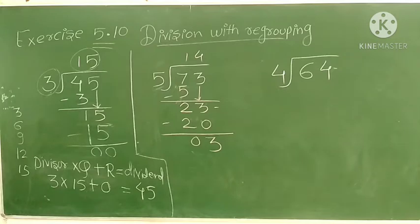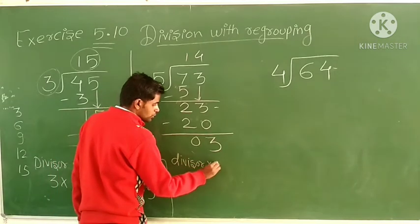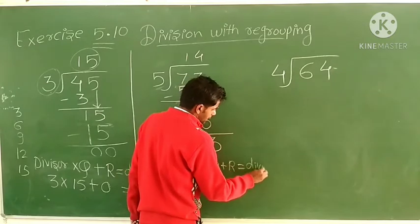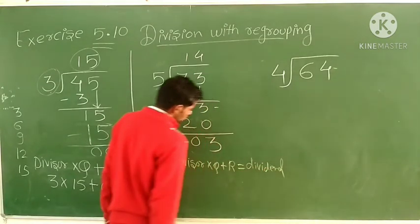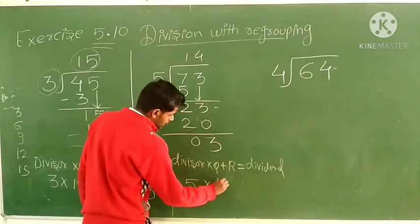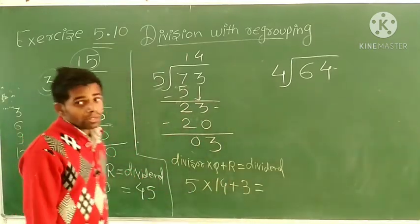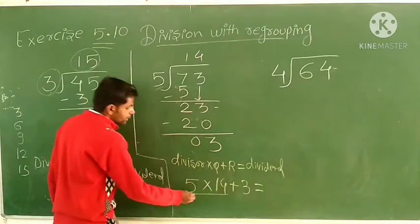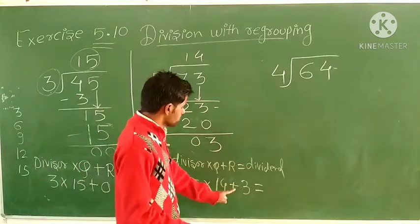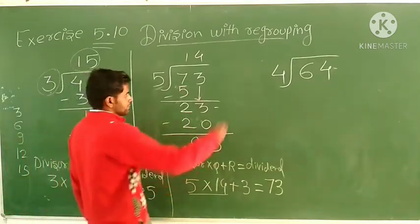Now we check the answer. Divisor × quotient + remainder = dividend. Divisor is 5, quotient is 14: 5 × 14 = 70. Then add remainder 3: 70 + 3 = 73. And 73 is our dividend, so the answer is correct.